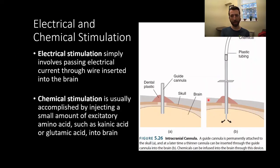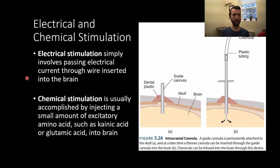Going back to our cannulation methods, we can produce electrical or chemical stimulation artificially. Electrical stimulation simply involves passing electrical current through a wire inserted into the brain — because of the electrochemical nature of neurons, this causes stimulation of those neurons. Chemical stimulation can be accomplished by injecting a small amount of an excitatory neurotransmitter, such as kainic acid or glutamic acid, into the brain.